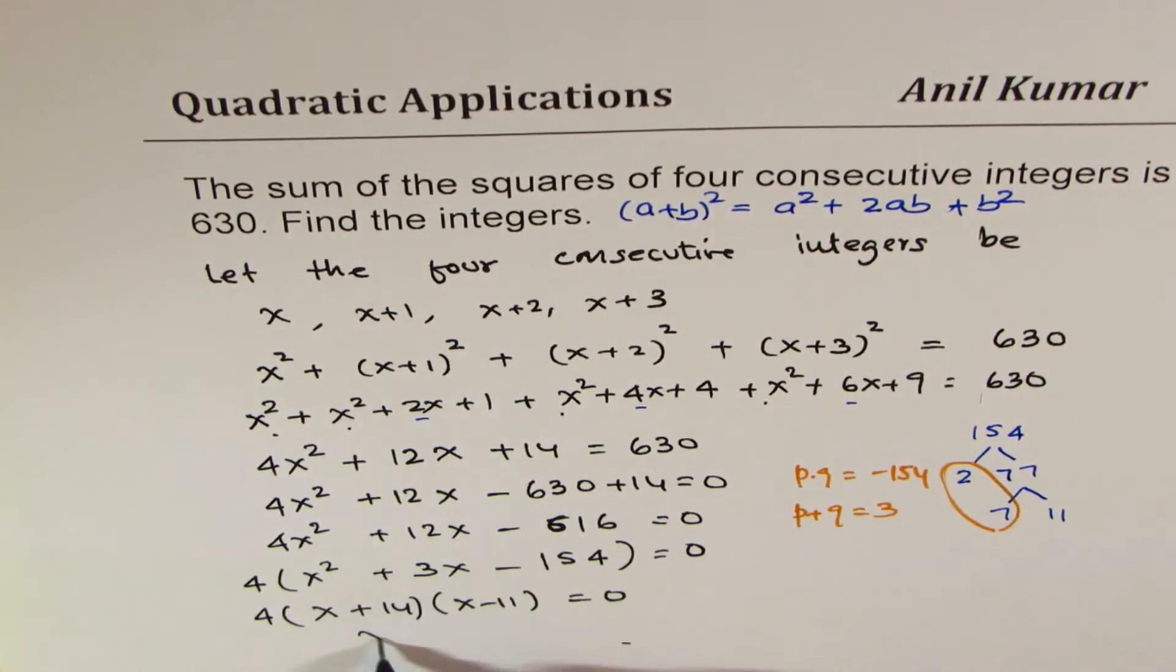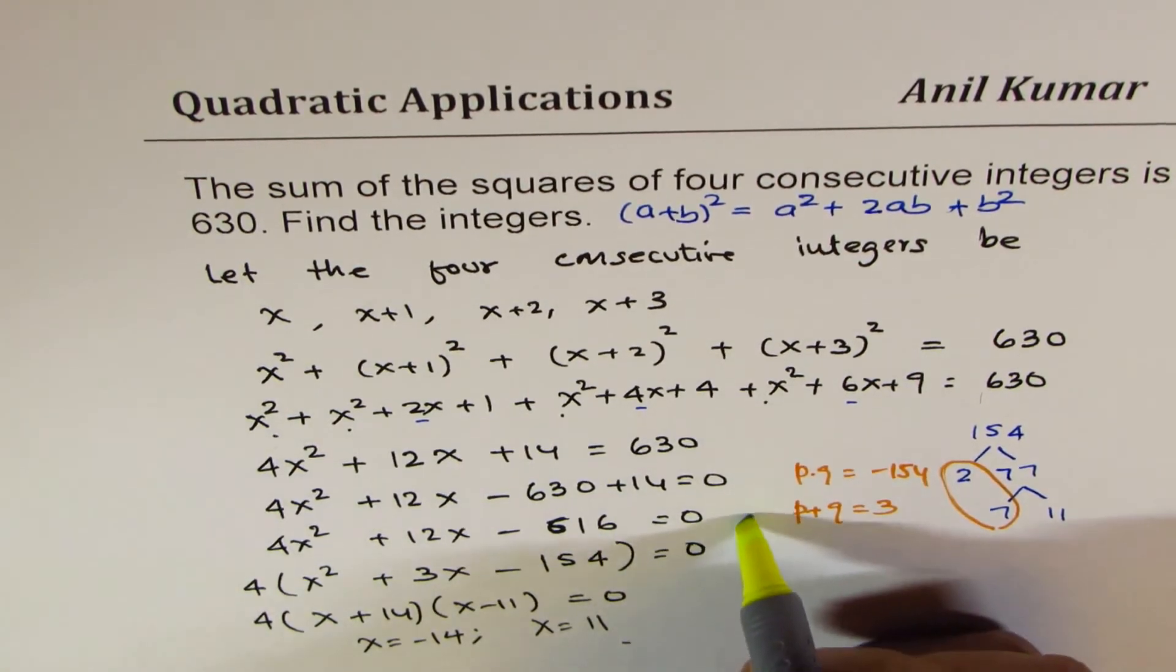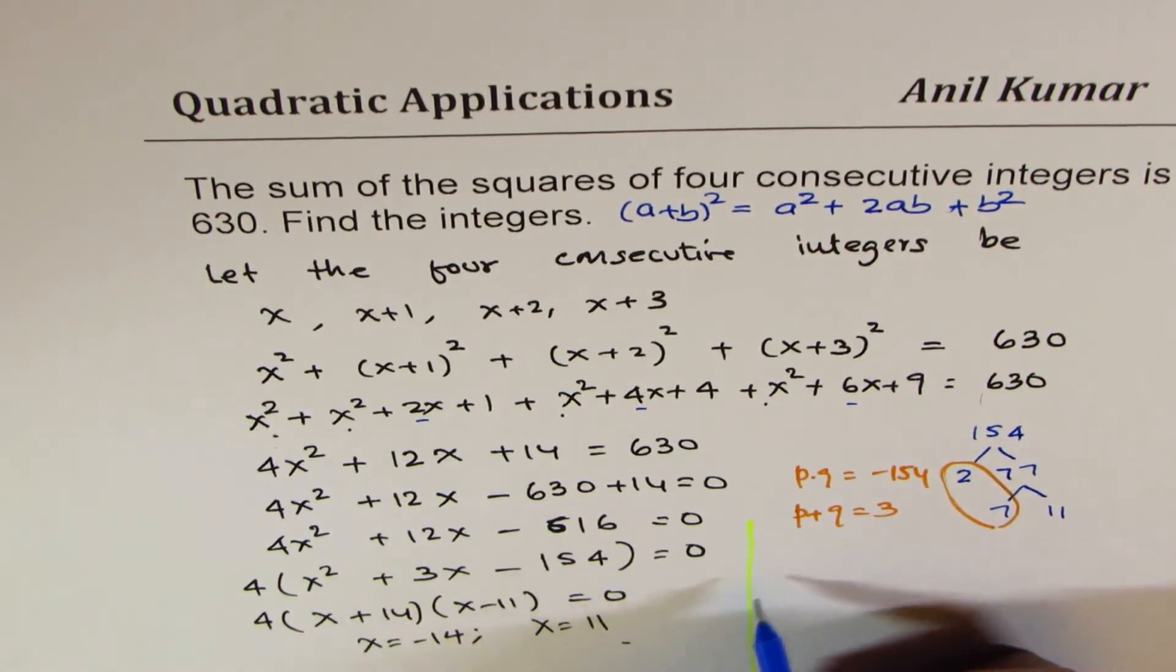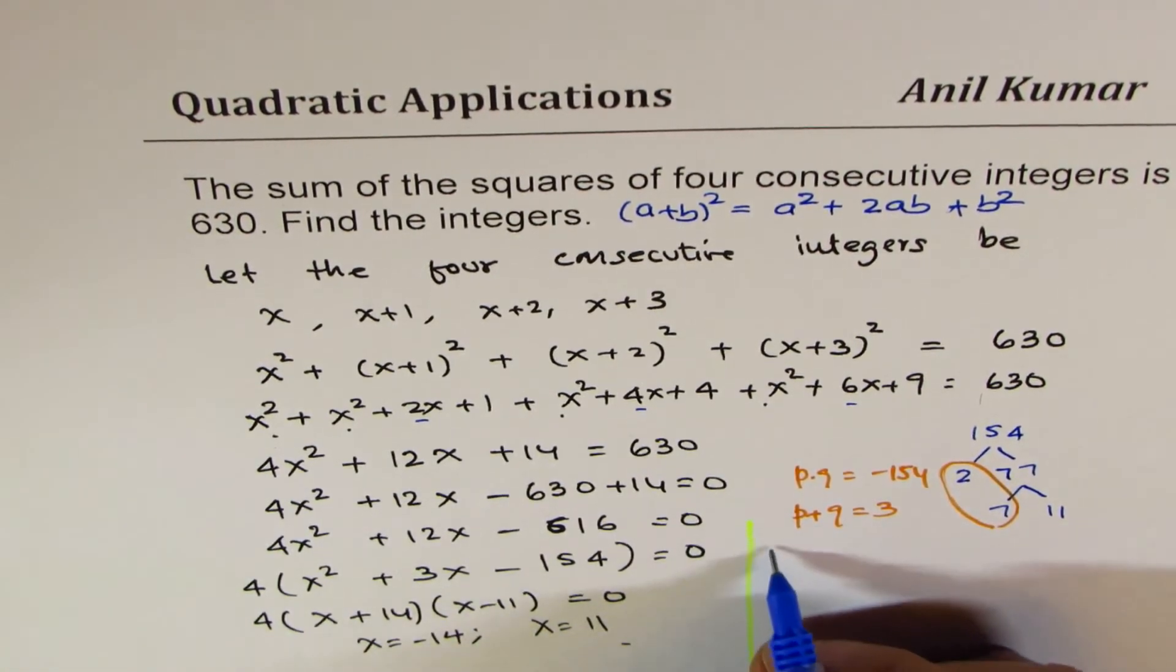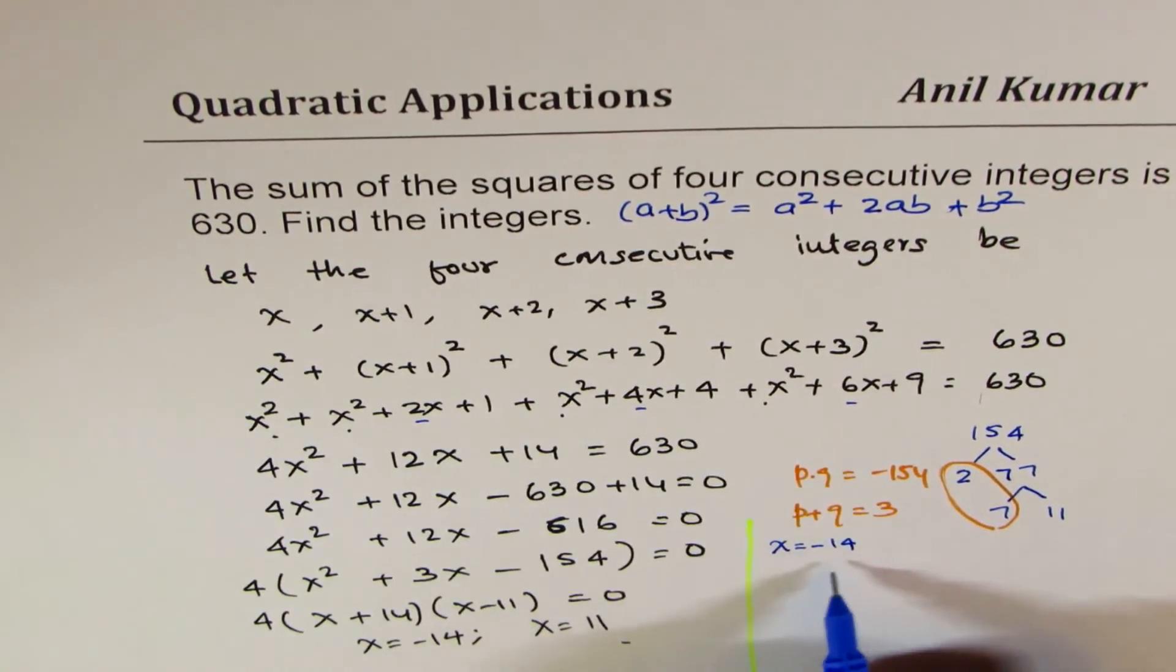Now that gives you two solutions. One is x equals to minus 14. The other one is x equals to 11. Now as you see, the equation here is sum of squares of 4 consecutive integers. So if I take minus 14 as one of those, then the 4 will be what? We can add one to each, so you get minus 13, minus 12, and minus 11.